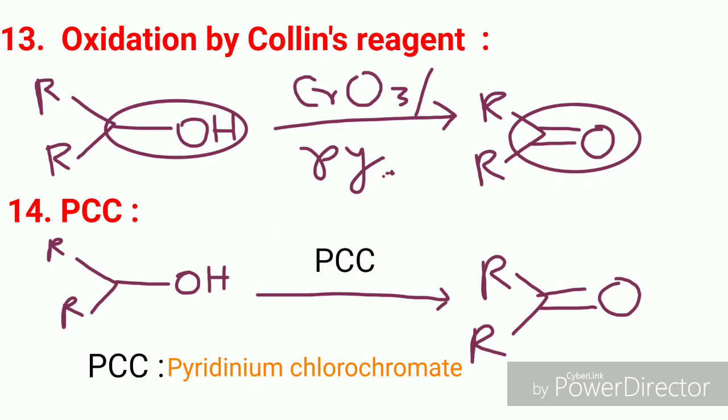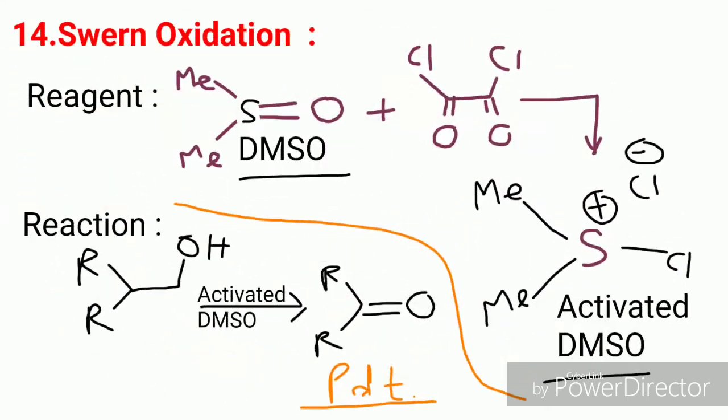Now, a very important oxidation: Swern oxidation. The reagent in Swern oxidation is activated DMSO, which is produced by the reaction of DMSO with oxalyl chloride (COCl₂). This activated DMSO converts the CH₂OH group to a keto group (C=O), and the final product is a carbonyl compound — here it is a ketone.